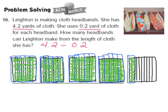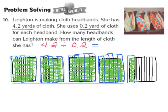Step 3 says the number of same size groups turns out to be the quotient. Let's count: 1, 2, 3, 4, 5, 6, 7, 8, 9, 10, 11, 12, 13, 14, 15, 16, 17, 18, 19, 20, and 21 groups. Our quotient turns out to be 21. When we divide 4 and 2 tenths by 2 tenths, the quotient is the whole number 21. So Layton can make 21 headbands from the amount of cloth she has.